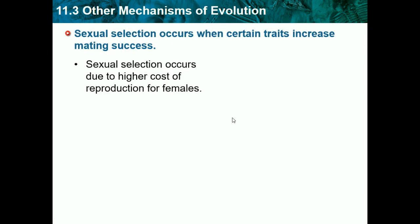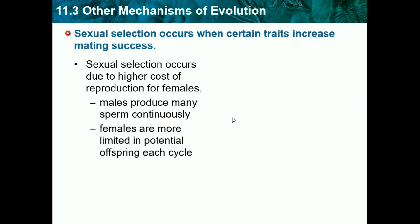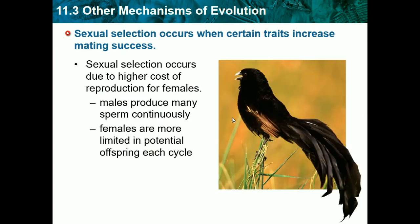Sexual selection occurs when certain traits increase mating success. It occurs due to the higher cost of reproduction for females, while males produce many sperm continuously. Females are more limited in potential offspring each cycle, so males end up competing with each other to get a mate.